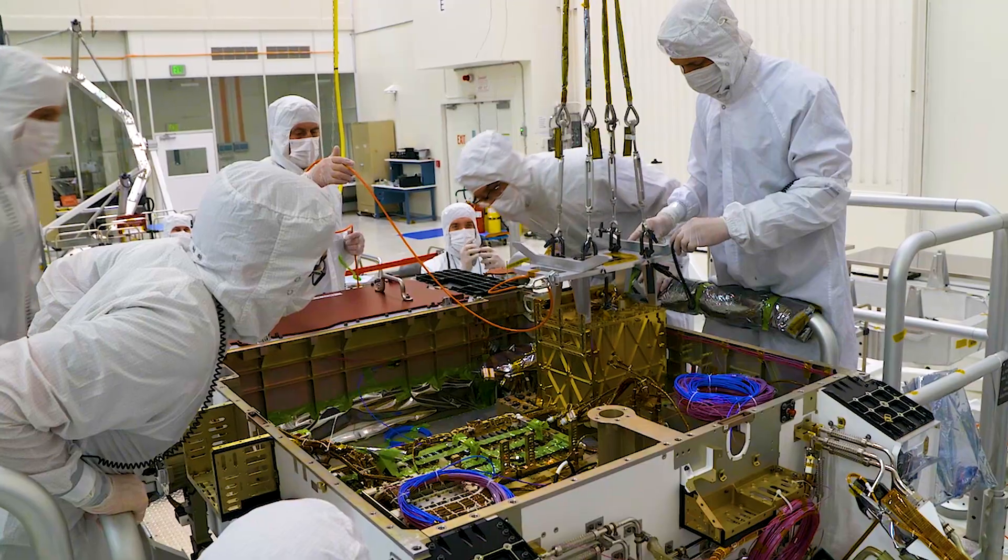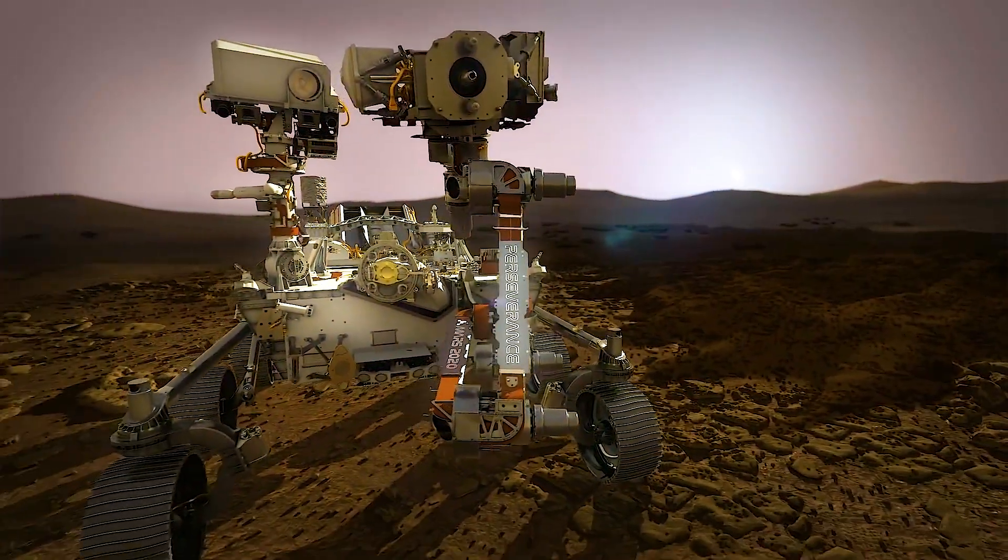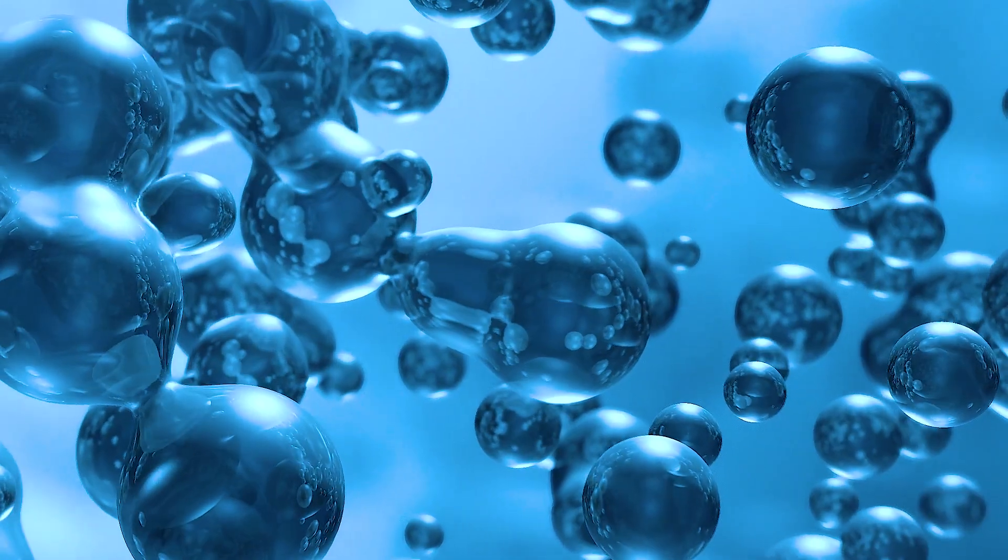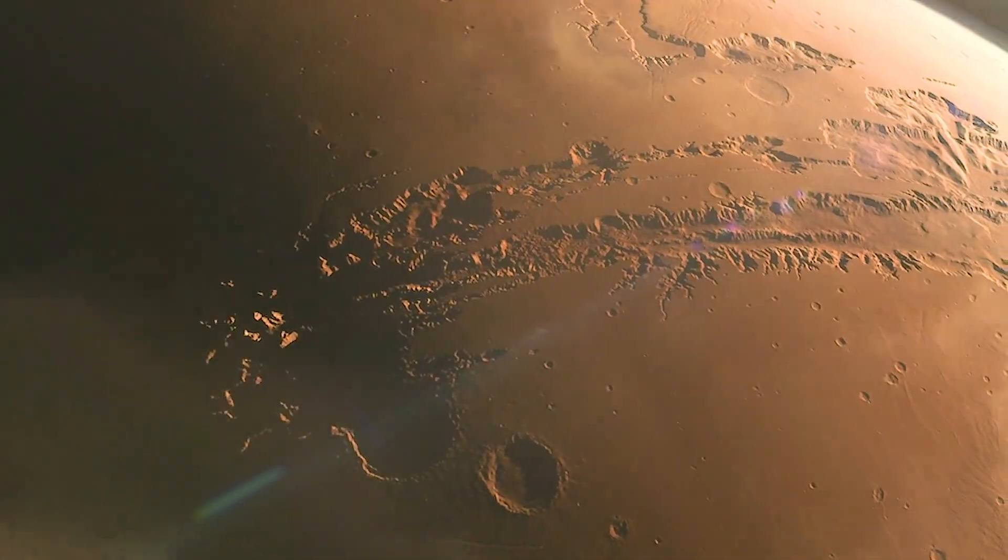So that's where MOXIE comes in. MOXIE is a technology on NASA's Perseverance rover, and it has proven for the very first time that we can extract oxygen from the carbon dioxide in the Martian atmosphere.